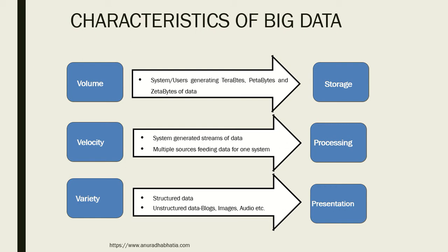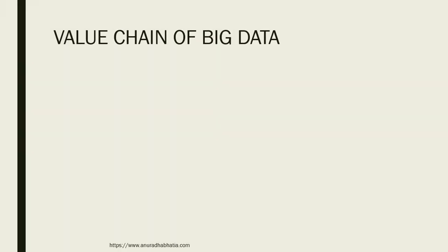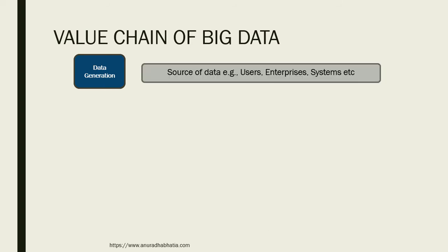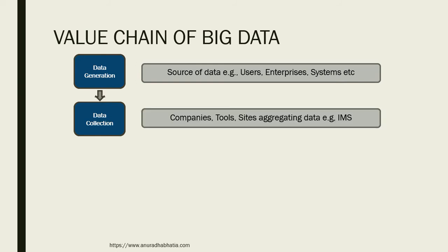Now let's take another concept called the value chain of big data. We have data generation — how big data is generated. There are different sources of information: users, enterprises, and systems. In the current scenario, we as users of mobile phones contribute a lot of data generated through WhatsApp, LinkedIn, and Twitter. After data is generated and collected, there is a lot of segregation of data done, because we need to filter out from this data what is information and what is knowledge.